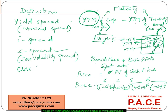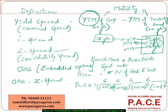Option adjusted spread (OAS) is more applicable when there are embedded options in the bond. To adjust for the optionality, we talk about OAS, which is nothing but the Z-spread minus the cost of the option. This relationship between OAS and Z-spread accounts for the cost of the call option, creating an option adjusted spread as an adjustment to the zero volatility spread.